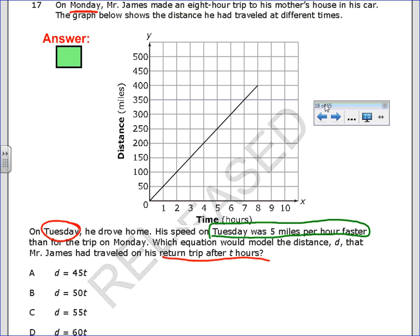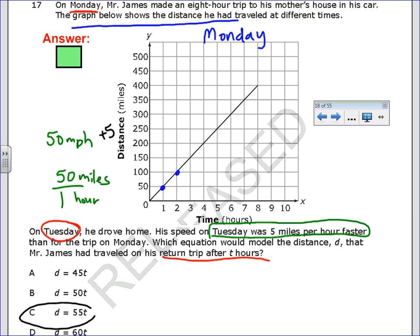So how fast did he travel on Tuesday? Well, the graph below shows the distance he traveled on Monday. I can realize that if I'm going through a corner, he's traveling 50 miles in 1 hour or 50 miles per hour. Down here, it says that on Tuesday, he was 5 miles per hour faster than Monday. So if I take 50 and I add 5, that makes it 55. So, the answer to 17 is C.